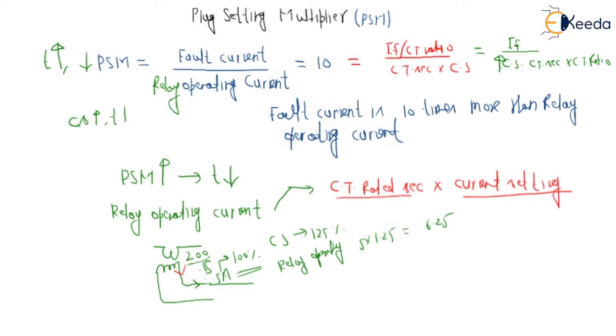This means if the CS (current setting) value is high, the PSM would be low, and the time taken will also be high. If the CS value is less, the time taken will be less.